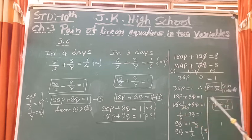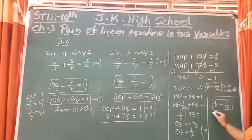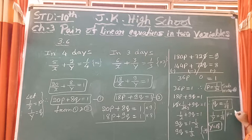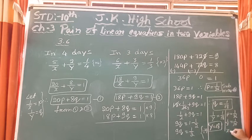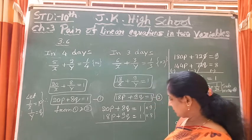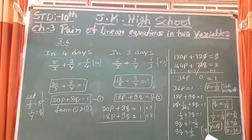Since p equals 1/x and q equals 1/y, we substitute back: 1/x equals 1/36 gives x equals 36, and 1/y equals 1/18 gives y equals 18. The time taken by one man alone is 36 days and by one woman alone is 18 days. That is the answer to the second statement problem.